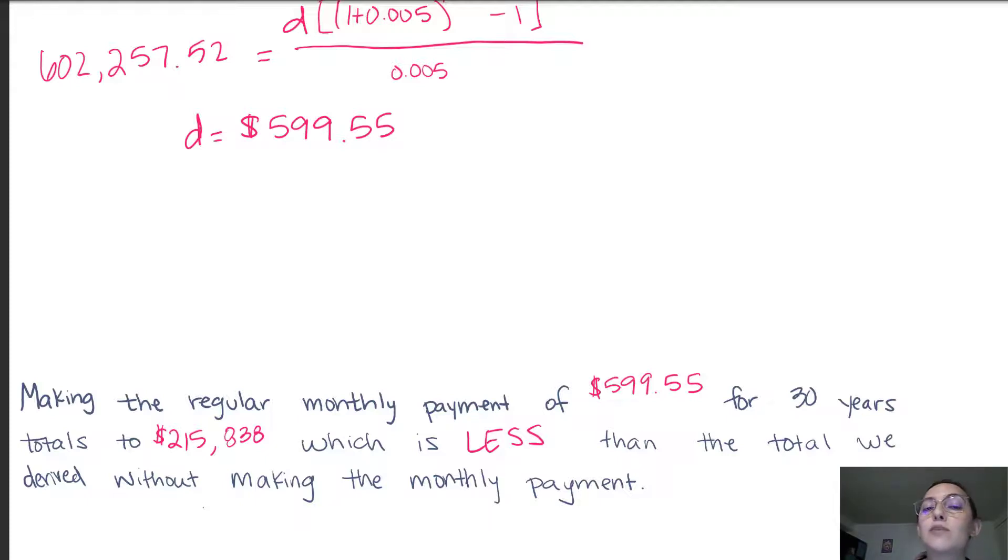So this should make sense because as we've explored in previous videos, as you're making regular payments in terms of savings, money grows and it grows a lot faster. In this case, we're using the savings rule to pay off an amount so the amount that we're borrowing or the amount that we owe will also decrease a lot faster than if we just let it sit.